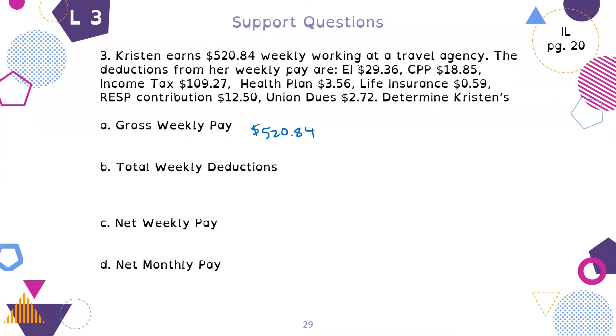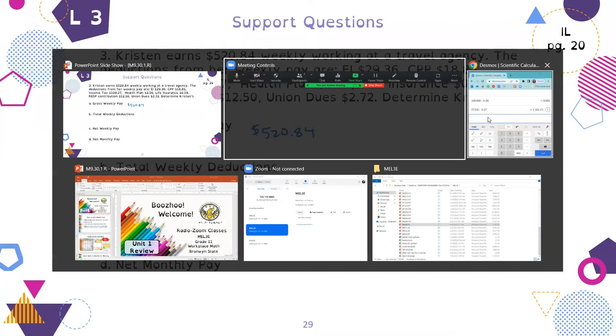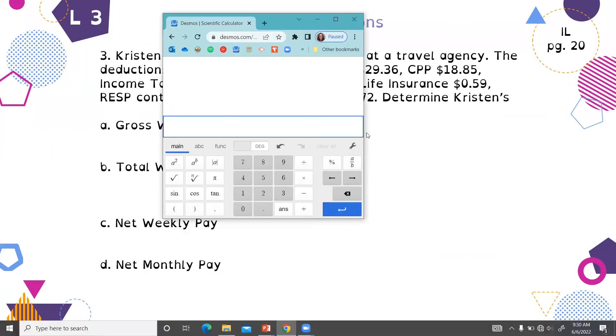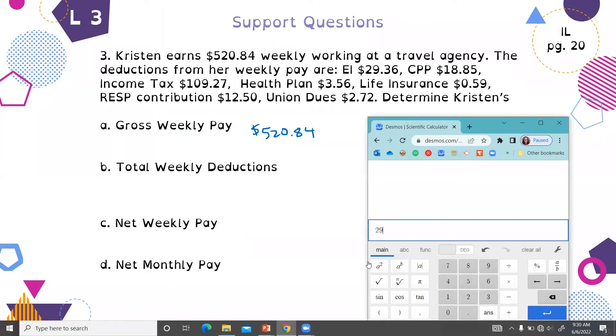What is her total weekly deductions? Now we need to add together all of these deductions. I'm just going to calculate it on my calculator to save time. Those are going to be her total weekly deductions. This happens every single week, that on her pay this amount of money is taken off to contribute to these various different places. That is a total of $176.85.